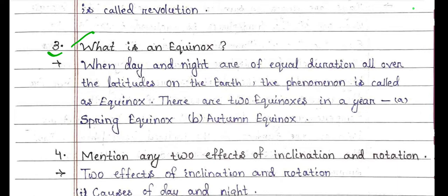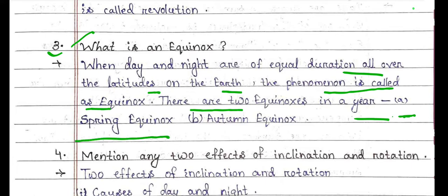What is an equinox? When day and night are of equal duration all over the latitudes on the Earth, the phenomenon is called an equinox. There are two equinoxes in a year: spring equinox and autumn equinox.